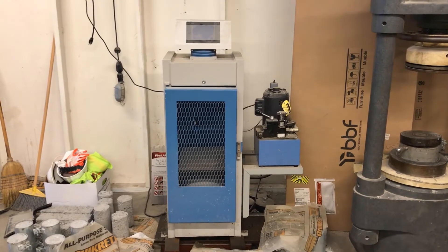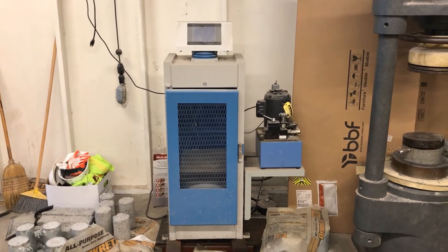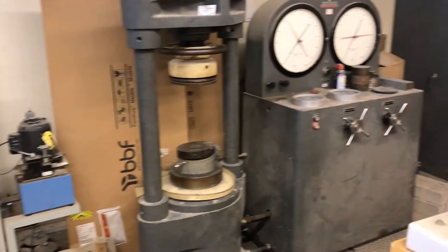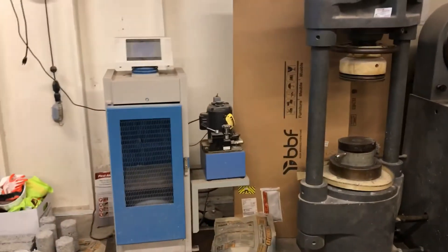So let's look at the whole thing in context. And next to it. So this is the ELE concrete compression testing machine. Next to it is the Tineus Olsen. Right over here. So there you have it.